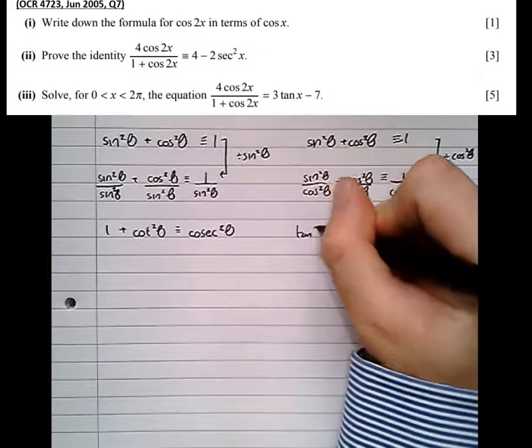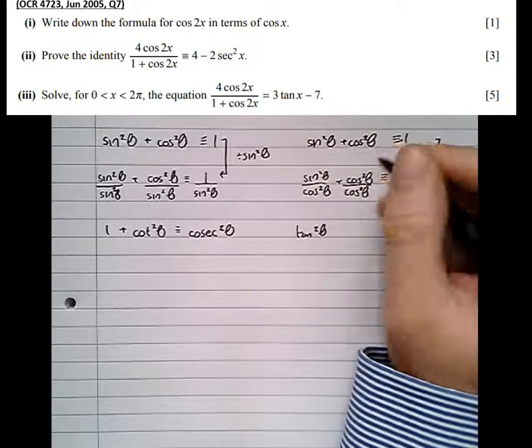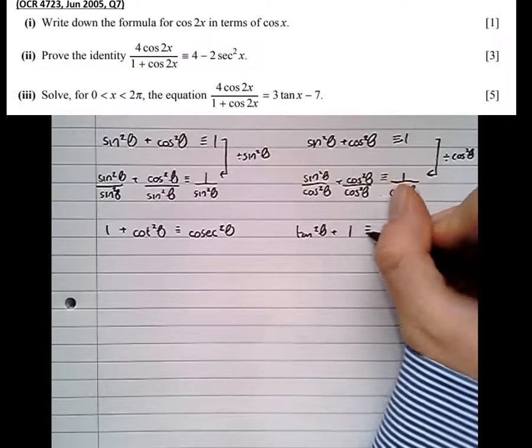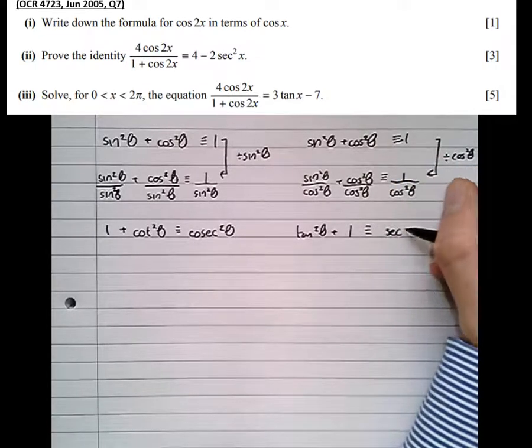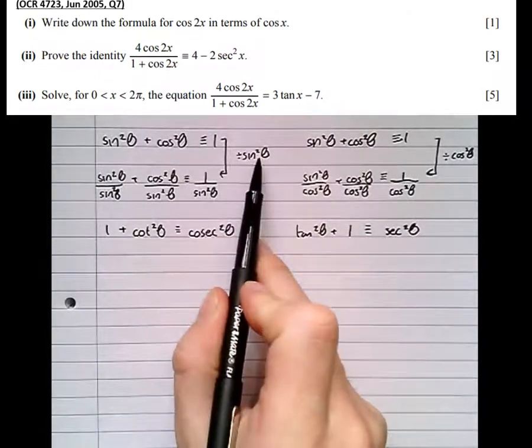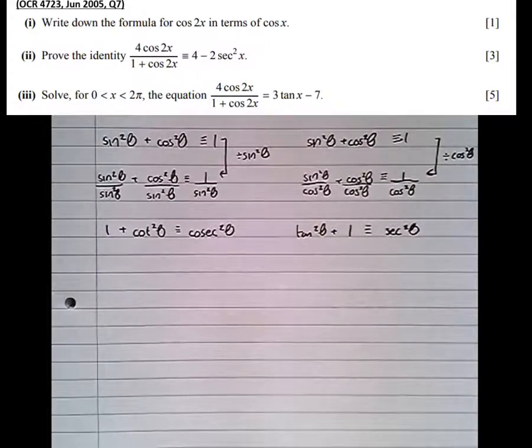That's tan squared theta, sine over cos, plus, well, anything divided by itself is 1, is sec squared theta. 1 over cos is sec. So we've generated 2 more trig identities regarding the reciprocal trig functions by simply dividing the original one by sine squared theta, and then dividing it by cos squared theta.